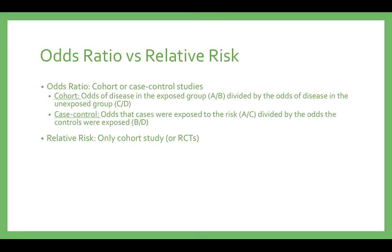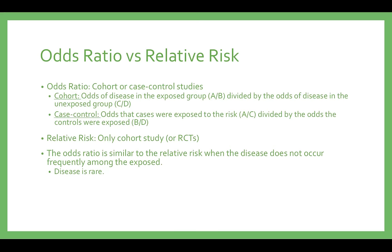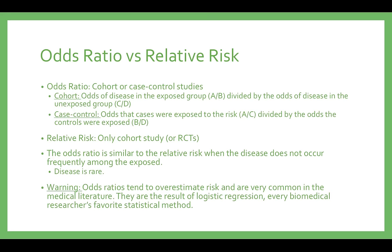Relative risk can only appear in cohort studies or possibly at times in randomized control studies. Relative risk and odds ratios are comparable in magnitude only when the outcome under study is rare, for instance some cancers. This is because the results of the relative risk formula and odds ratio formula become more similar as the denominator gets larger and as the number of disease cases gets smaller. It is important to consider that odds ratios consistently overestimate risk when the outcome is more common, for instance in hyperlipidemia. As a result, relative risk should be used if possible, and caution should be exhibited when interpreting odds ratios.